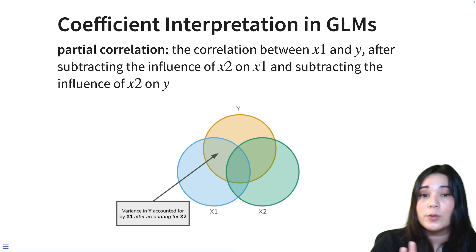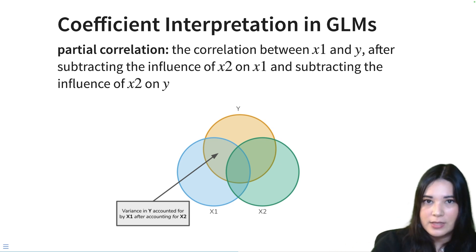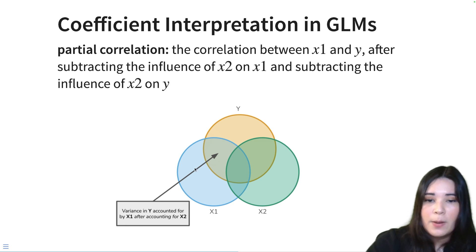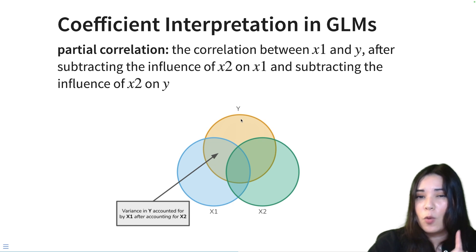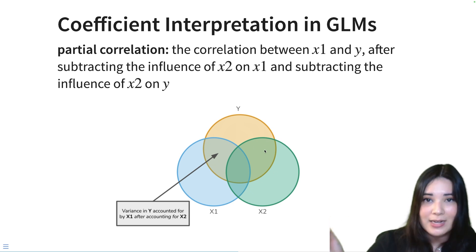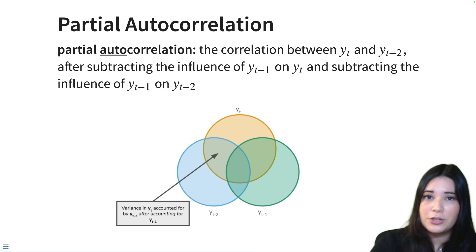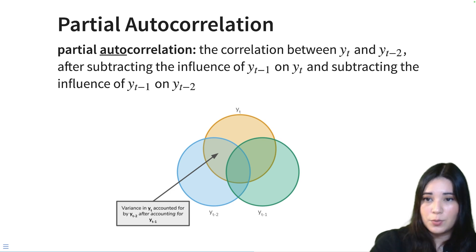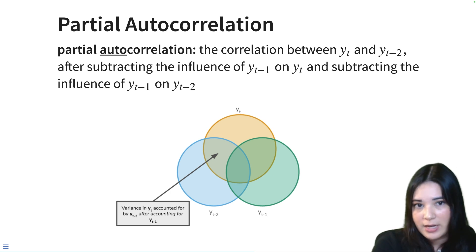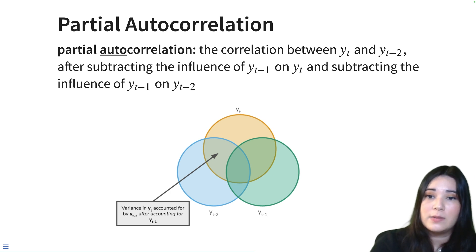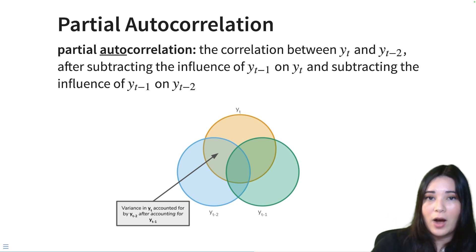And in a partial correlation, we're doing almost the exact same thing, except we also subtract the influence of x2 on y. So we're looking at the overlap in terms of variance in y accounted for by x1, but we're no longer comparing that to all of the variance in y — rather only the variance in y not accounted for by x2. And that's exactly what partial autocorrelation does, but of course now we're looking at a time series. We're looking at the correlation between our current time step and some other time step — in this case y(t-2) — after subtracting out the influence of y(t-1) both from y(t) and from y(t-2).